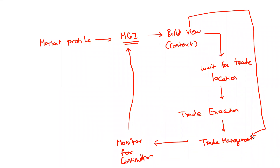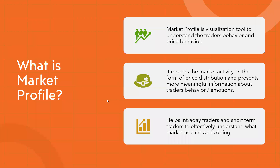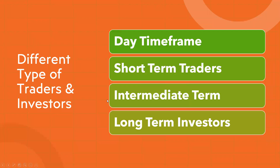Let me go back to the basics of market profile. We can classify all traders and investors into four major categories: day-timeframe traders (intraday and short-term traders), intermediate traders, and long-term traders. Long-term and intermediate traders belong to the investor category, while day-timeframe and shorter timeframe traders belong to the trading category.